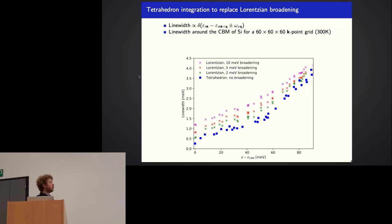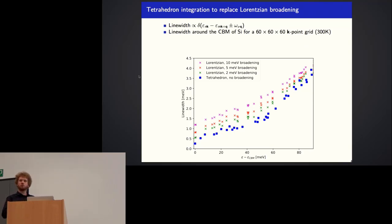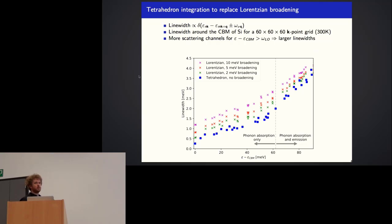Zooming in close to the conduction band minimum of silicon in an energy region of 90 meV, we see that very close to the conduction band minimum the linewidths are very small, so the lifetimes are very large. This is because the electrons don't have many possibilities to emit phonons. Below a certain energy given by the optical phonon energy, electrons cannot emit optical phonons because they would have to go into the forbidden band. Above this energy, electrons can begin to emit optical phonons, so there are more scattering channels and the linewidths increase.